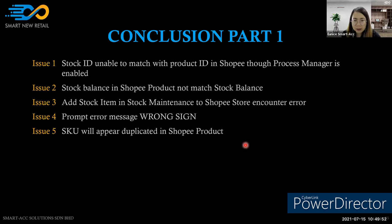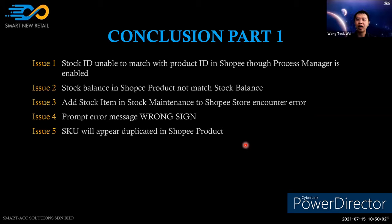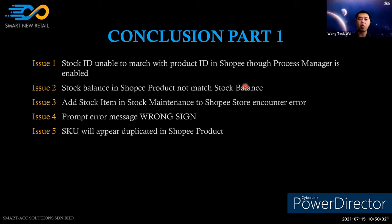Question: is there any message prompt for a duplicated stock ID? Currently there is no message. Regarding which duplicated record is the accurate one — normally both duplicate rows are the same record; it just happens because two people downloaded at the same time. This situation is very rare. If encountered, please raise a case for investigation.